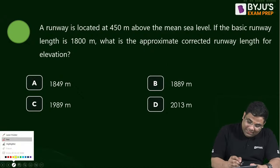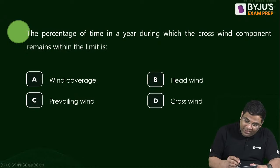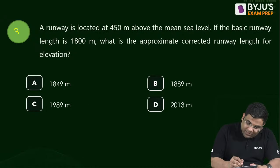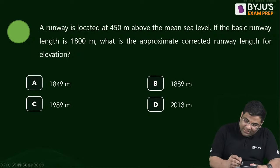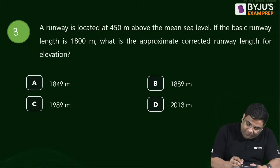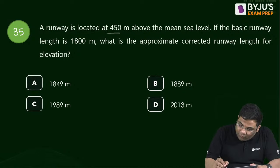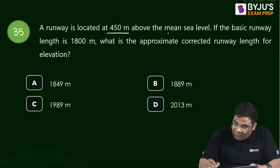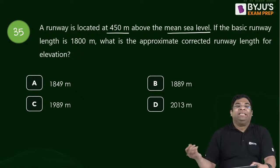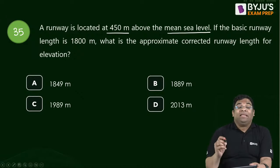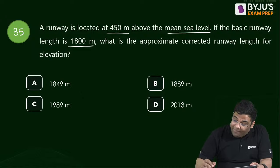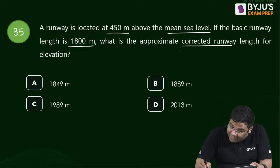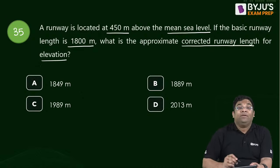Question 35: Runway elevation correction. The runway is at 450 m above mean sea level and the basic runway length is 1800 m. The approximate corrected runway length for elevation needs to be calculated.